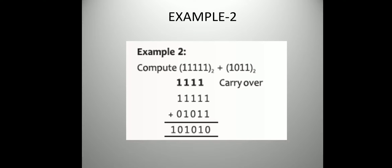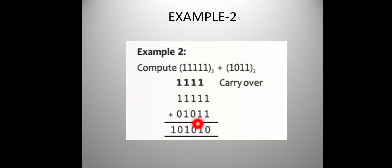Next, 1 and 1 gives 10. So 0 will come down and 1 will be carried. Then 1 and 1 gives 10, and 10 plus the carry of 1 gives 11. So 1 comes here and 1 is carried. Then again 1 and 1 and 1 gives 10 — so 0 comes down and 1 is carried.